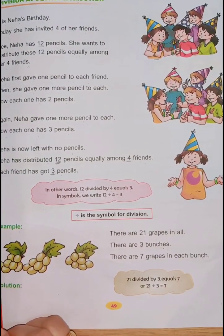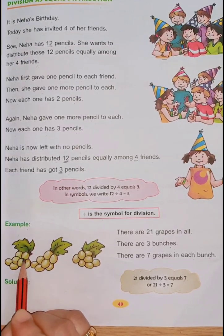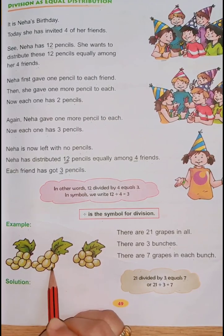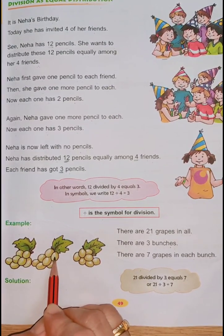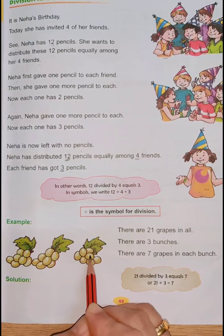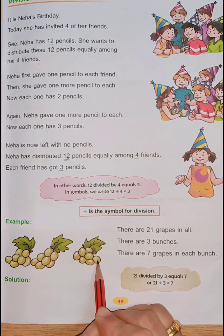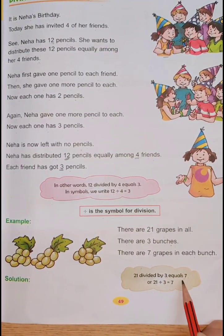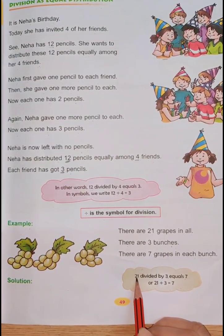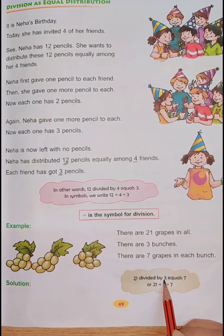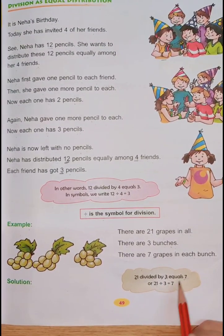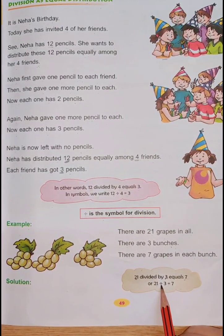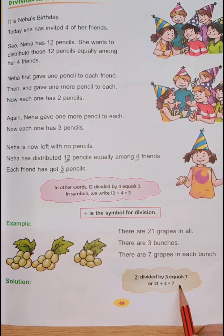Each means one bunch. Counting the first bunch: 1, 2, 3, 4, 5, 6 and 7 — seven in bunch one. Second bunch: 1, 2, 3, 4, 5, 6 and 7. Third bunch: 1, 2, 3, 4, 5, 6 and 7. So 21 divided by 3 equals 7. Here 21 is the total grapes, 3 is the number of bunches, and 7 is the number of grapes in each bunch. Or 21 ÷ 3 = 7.